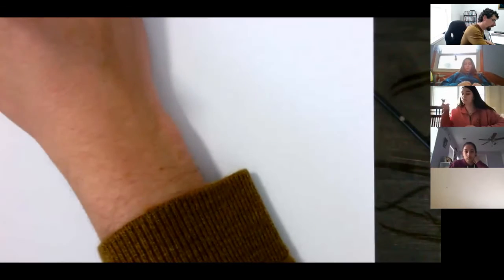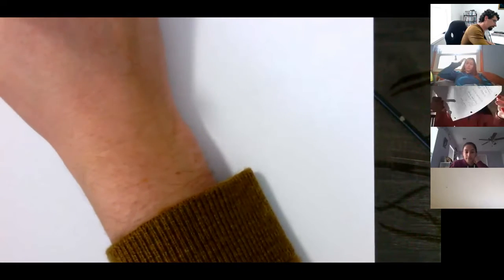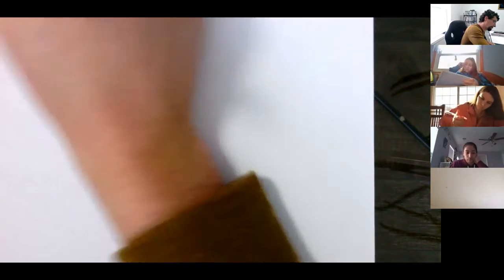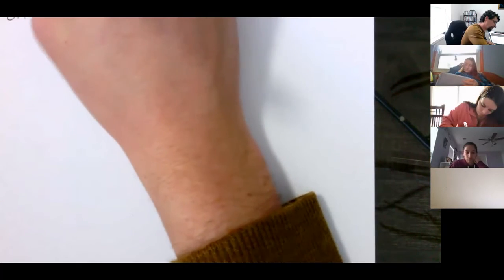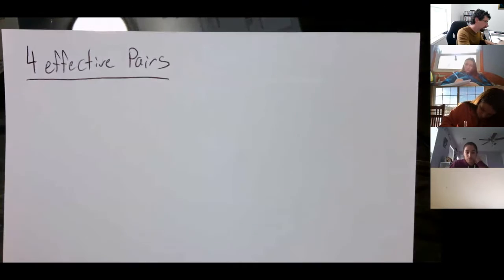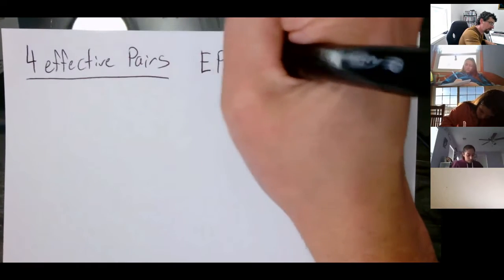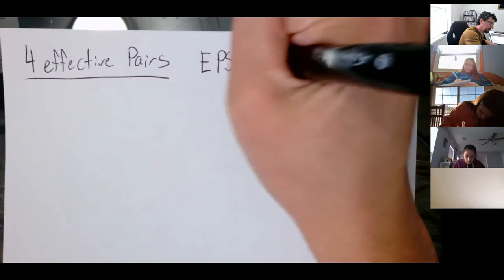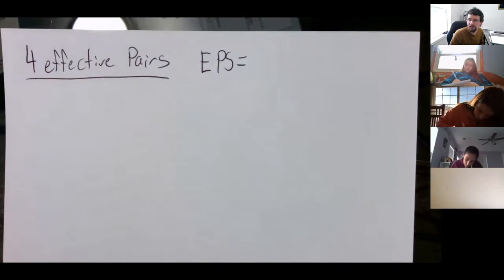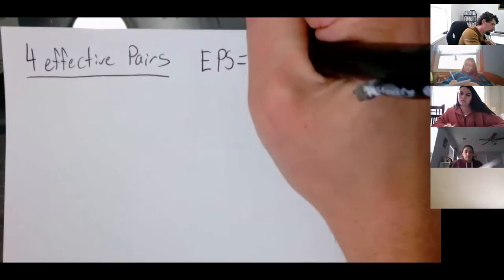Let's move up to four effective pairs. So we've got four effective pairs. What is the electron pair shape going to be for four effective pairs? Tetrahedral — yep, tetrahedral.